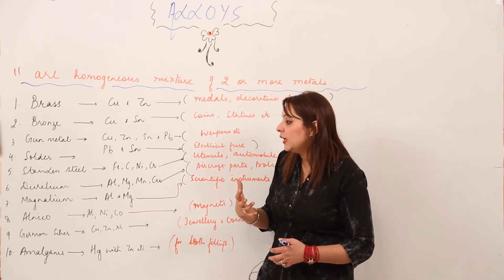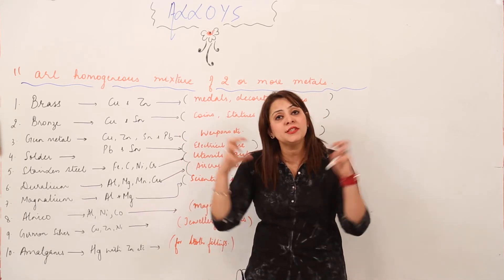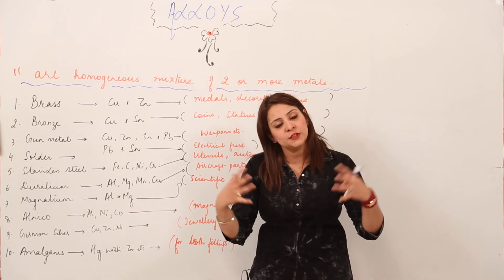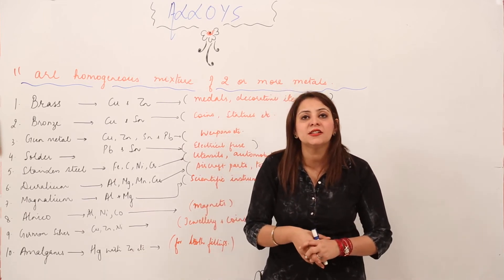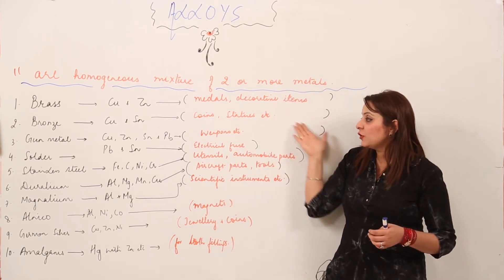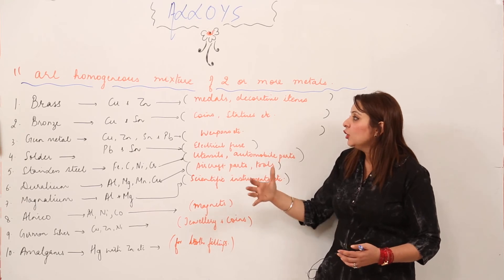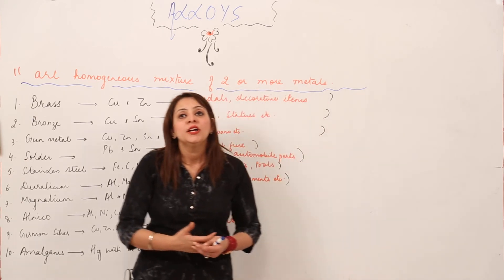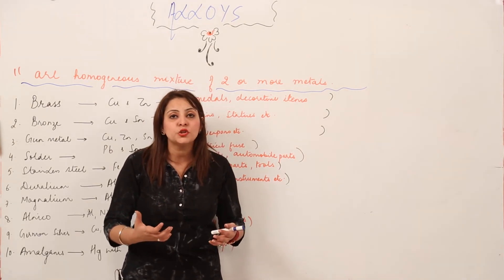These are the alloys. They are homogeneous mixtures because when you look at them, you do not see any different phases — the components thoroughly mix into each other. They are formed by heating the metals, allowing them to melt and mix, and then on cooling they form one solid mass — an alloy with improved properties used across almost every field.